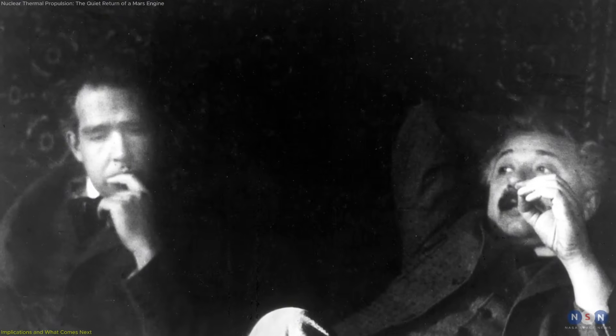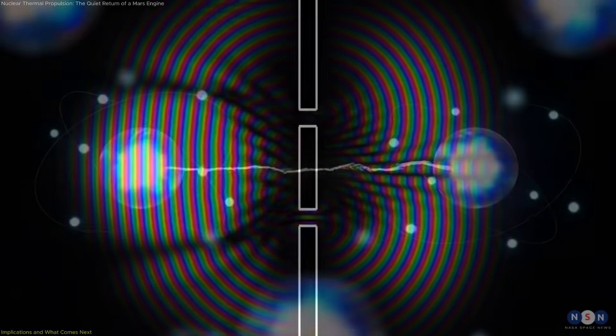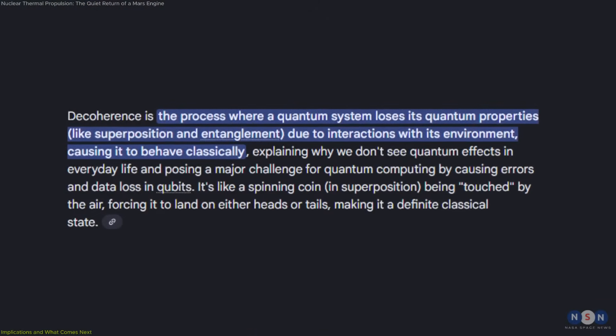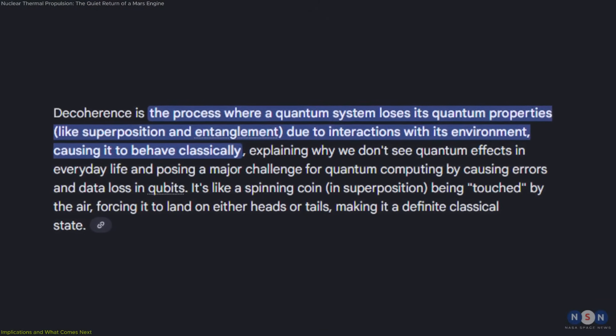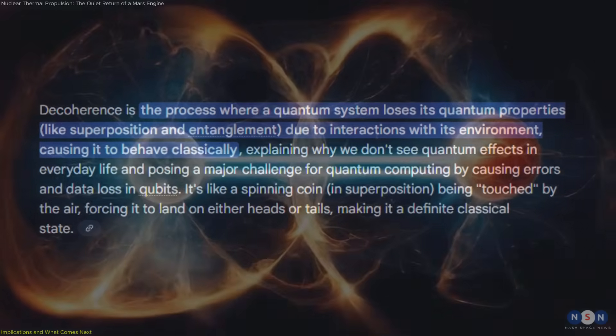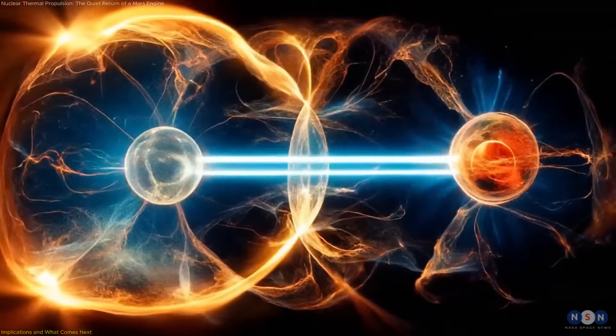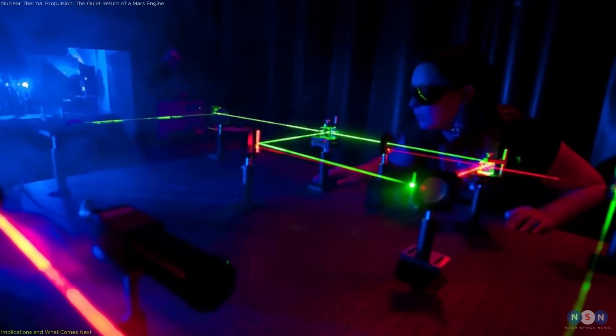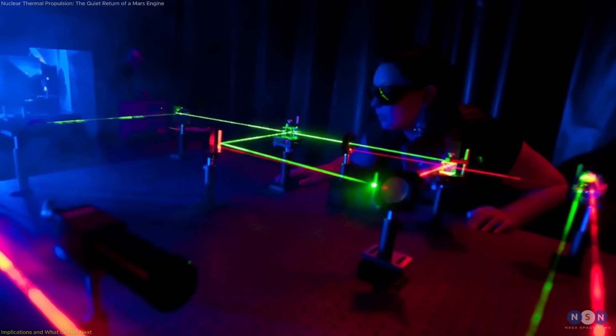Beyond settling a historical argument, these experiments open a new window on one of the deepest questions in physics: how quantum systems become classical ones. Decoherence is the process that makes macroscopic objects behave normally instead of displaying quantum interference. But despite decades of study, it has been difficult to observe and control this transition in a clean, isolated way.